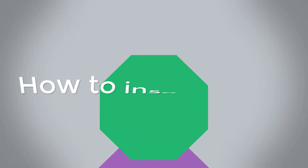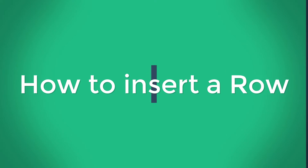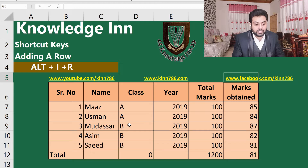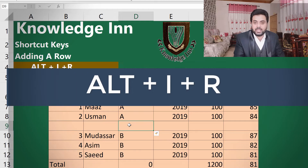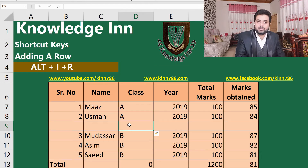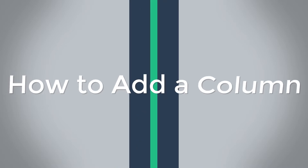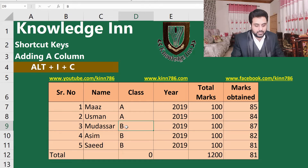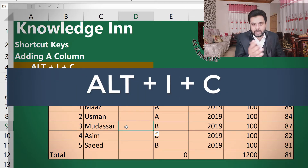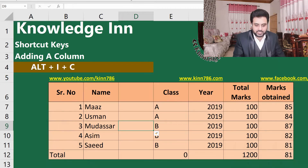Let's move to adding a row. If you want to add a row at D9, you simply have to press Alt+I+R — it will add a row above your selected cell. If you want to add a column at column D, you simply have to press Alt+I+C. C is for column, R is for row.